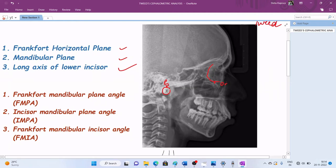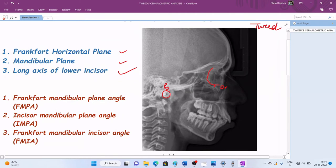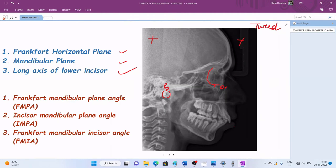Whenever we start hand tracing a cephalogram, it becomes important to mark or etch the radiograph at three points. So whenever we overlap it with the sheet and replace it, we are able to make out the exact position on which the initial points were marked.